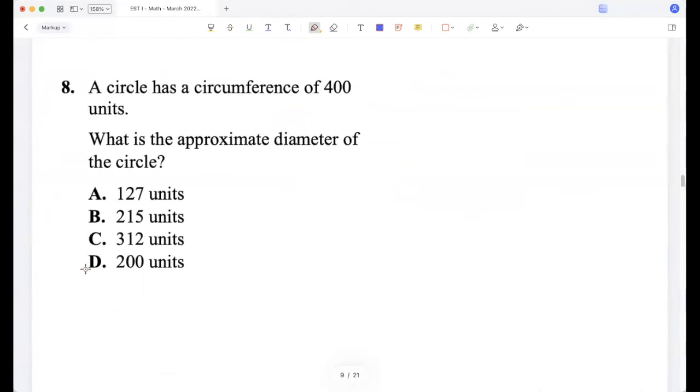A circle has a circumference of 400 units. What is the approximate diameter? So πd is 400, right? So d will be 400/π, which is 400/3.14, so about 400/3. So 1, 3 into 3, about very close to 133. So the best answer is option A.